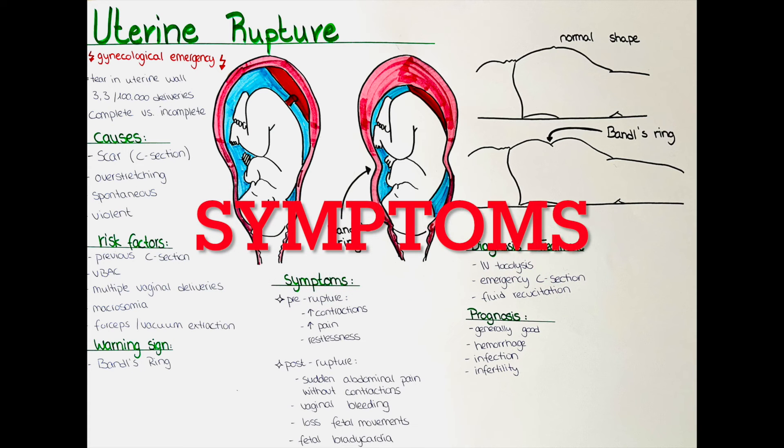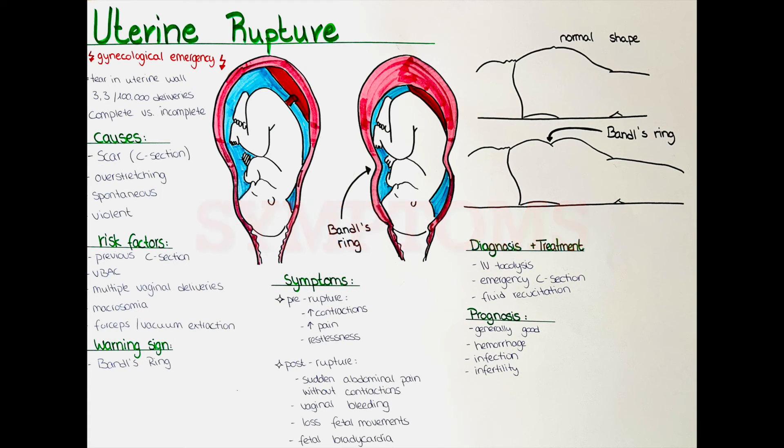What are the symptoms of uterine rupture? The symptoms can be divided into two categories: the pre-rupture symptoms and the post-rupture symptoms.